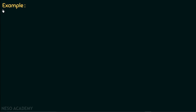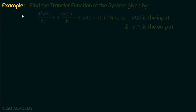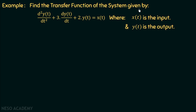Now we are done with the introduction of transfer function. Let's take one example to understand it in a better manner. The example is: find the transfer function of the system given by d²y(t)/dt² + 3·dy(t)/dt + 2y(t) = x(t), where x(t) is the input and y(t) is the output. We are given a system defined by this differential equation, and we need to calculate the transfer function.